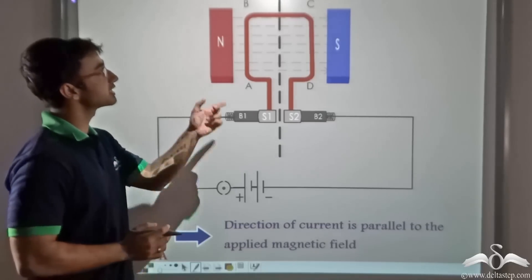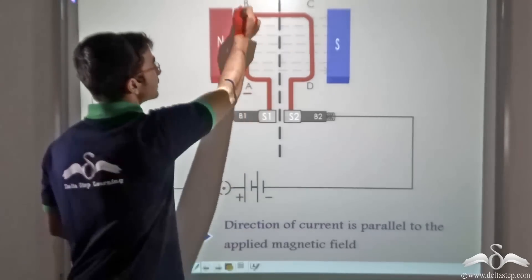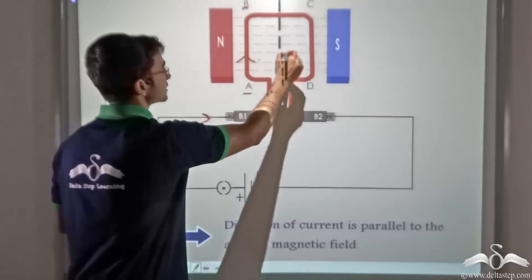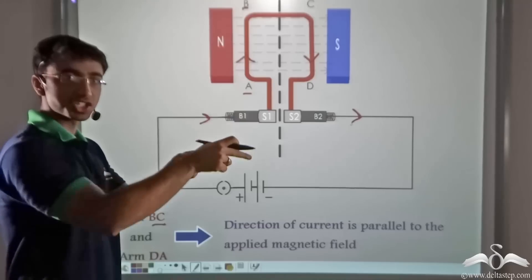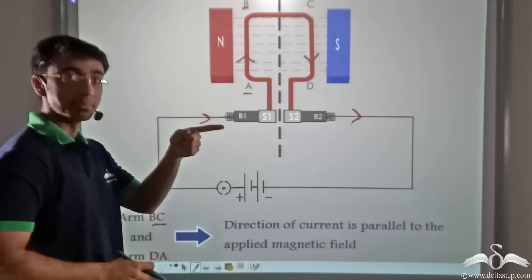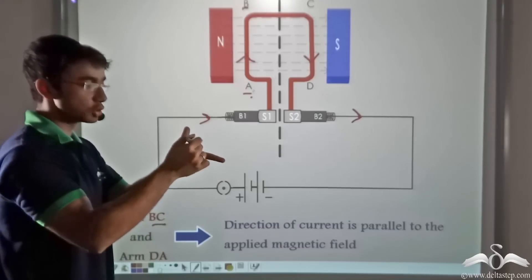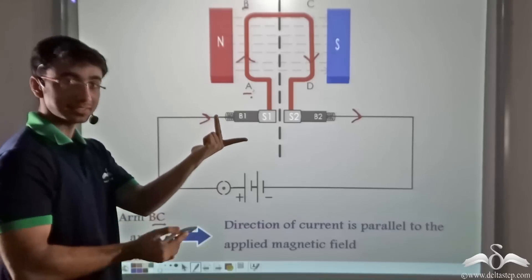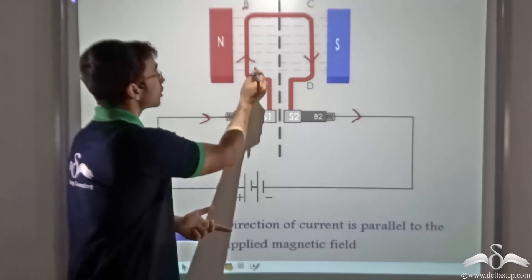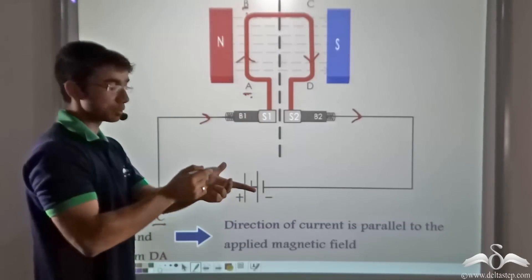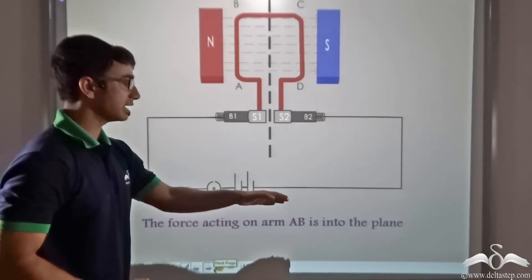Now consider arms AB and CD and how we can calculate the force on them using Fleming's left hand rule. Firstly consider arm AB — the direction of current is as shown. I take the index finger pointing in the direction of the magnetic field, and then outstretch my middle finger pointing in the direction of current along AB. If I stretch out my thumb perpendicular to both the index and middle finger, I find it gives me the direction of force acting on AB. In this case, it is into the plane of the screen.